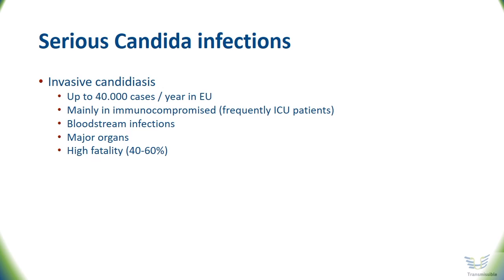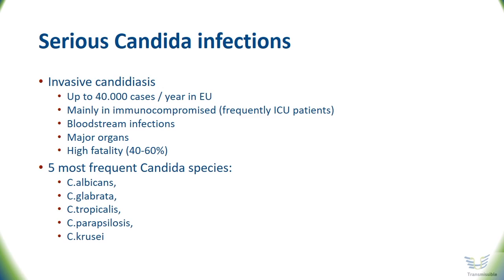These infections are serious and have a high fatality. Between 40 and 60 percent of cases at the ICU do not survive the impact of a Candida bloodstream infection. The five most common Candida species are Candida albicans, Candida glabrata, Candida tropicalis, Candida parapsilosis, and Candida cruciae.